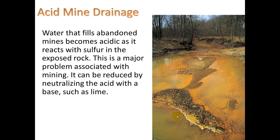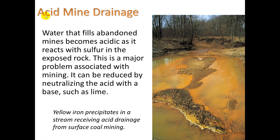Acid mine drainage: when a mine — which can be over a mile deep — is abandoned, water fills it. That water becomes acidic as it reacts with sulfur in the exposed rock, forming sulfuric acid. This is a major problem associated with mining. It can be reduced by neutralizing the acid with a base such as lime. We can see yellow iron precipitates in streams receiving acid drainage from surface coal mining.